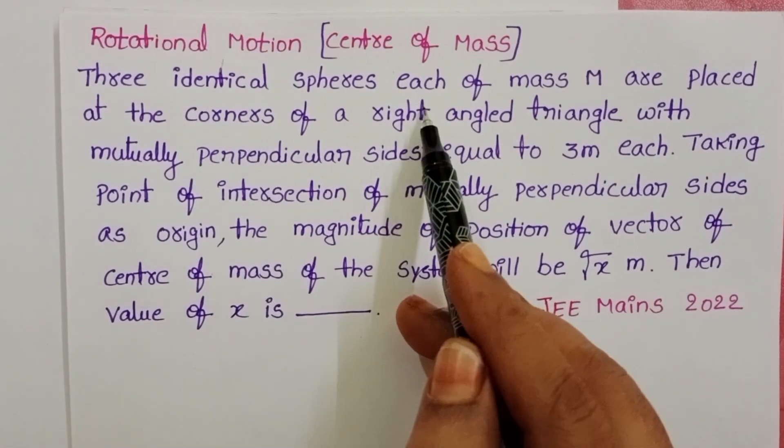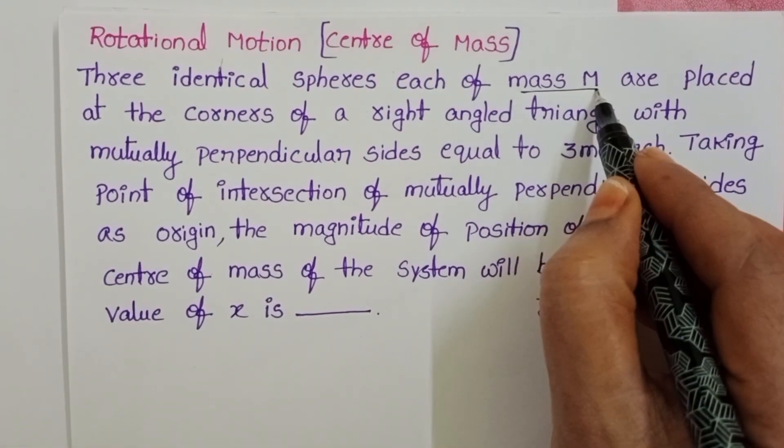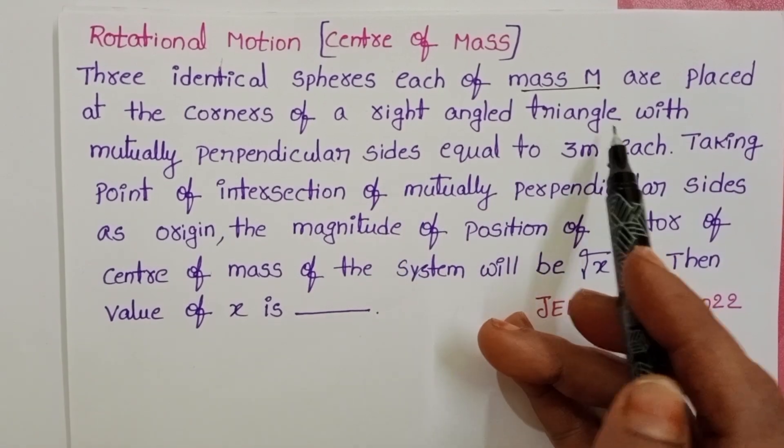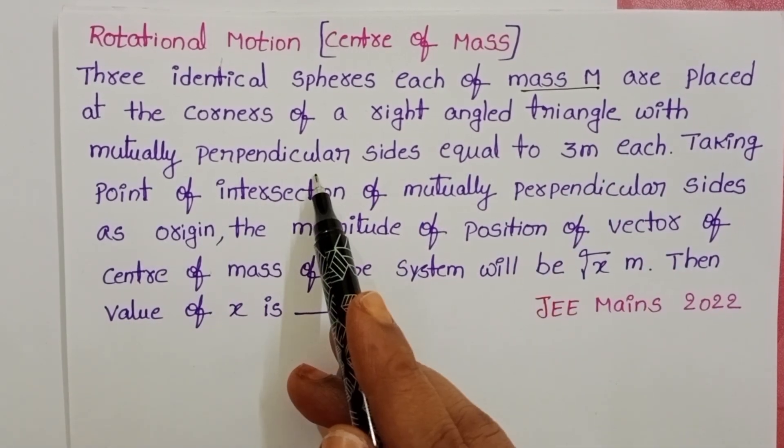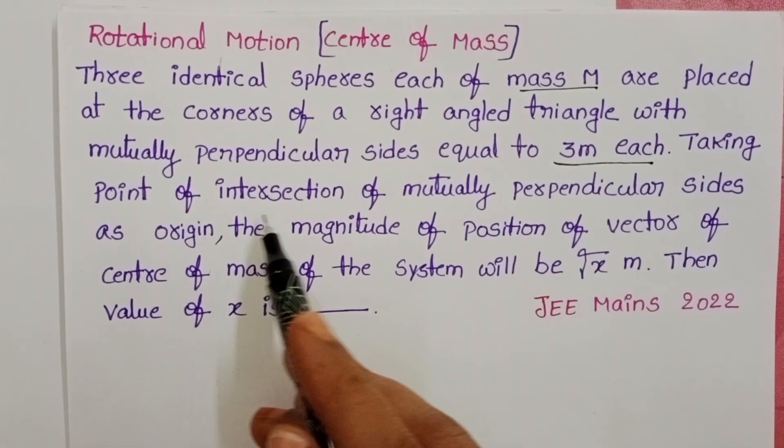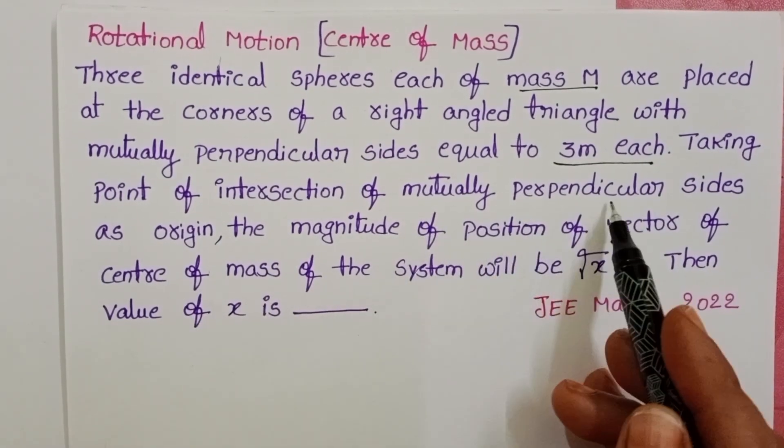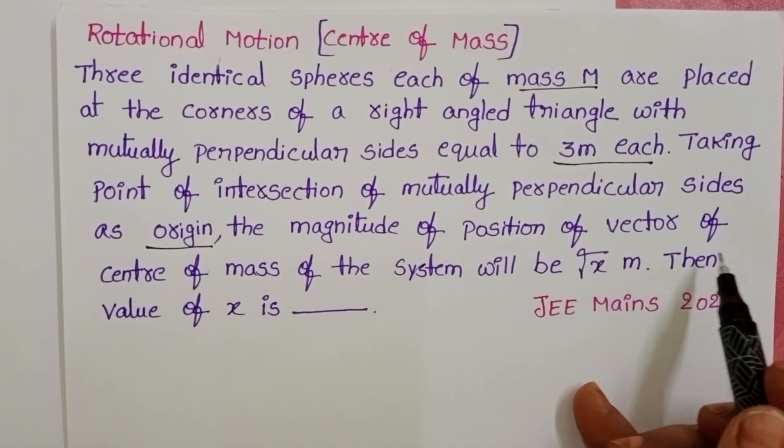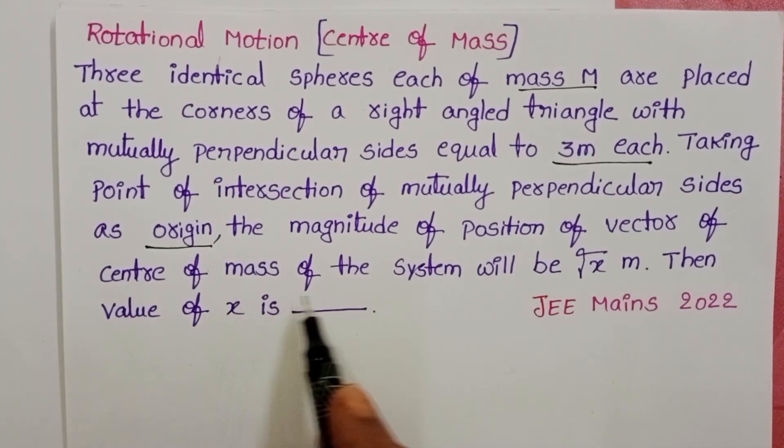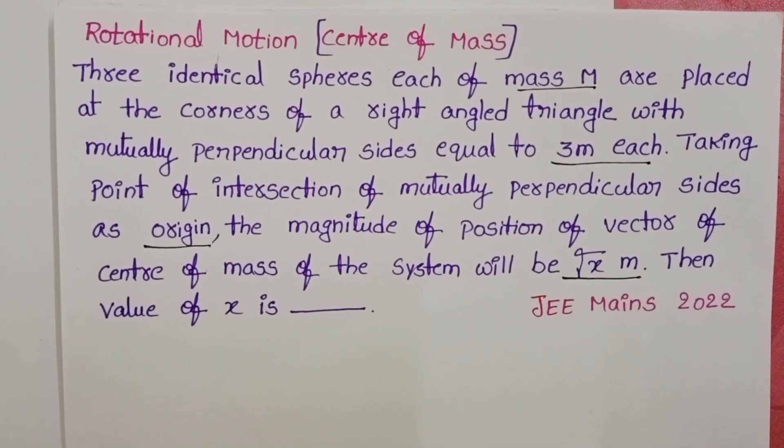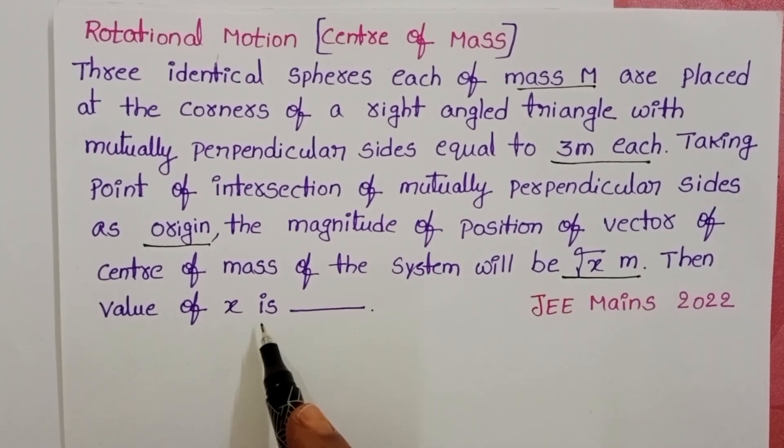Three identical spheres, each of mass M, are placed at the corners of a right angled triangle with mutually perpendicular sides equal to 3 meters each. Taking the point of intersection of mutually perpendicular sides as the origin, the magnitude of position vector of the center of mass of the system will be square root of x meters. Then the value of x is?